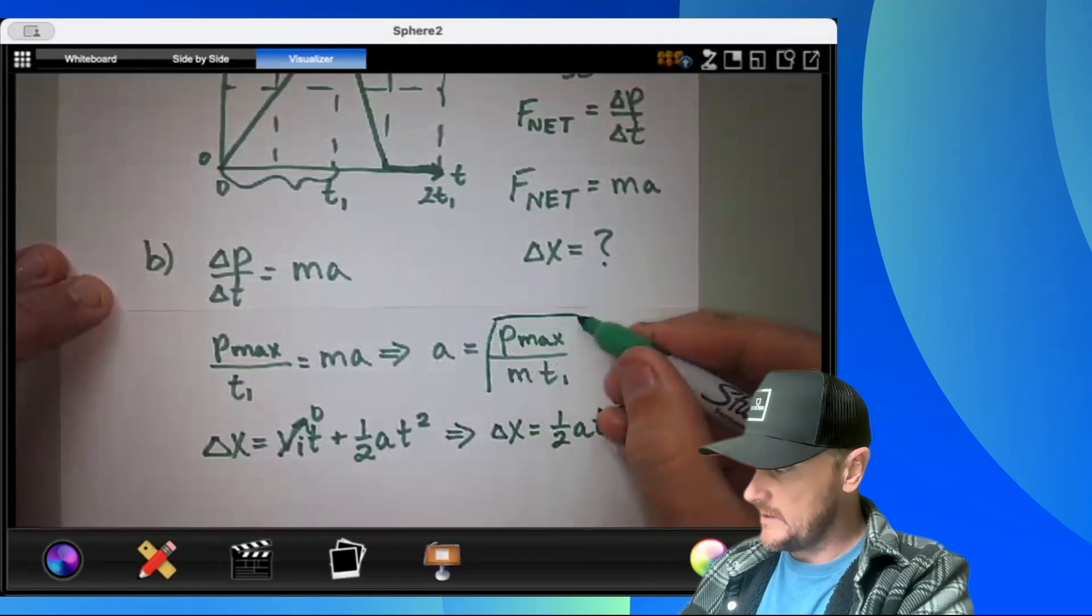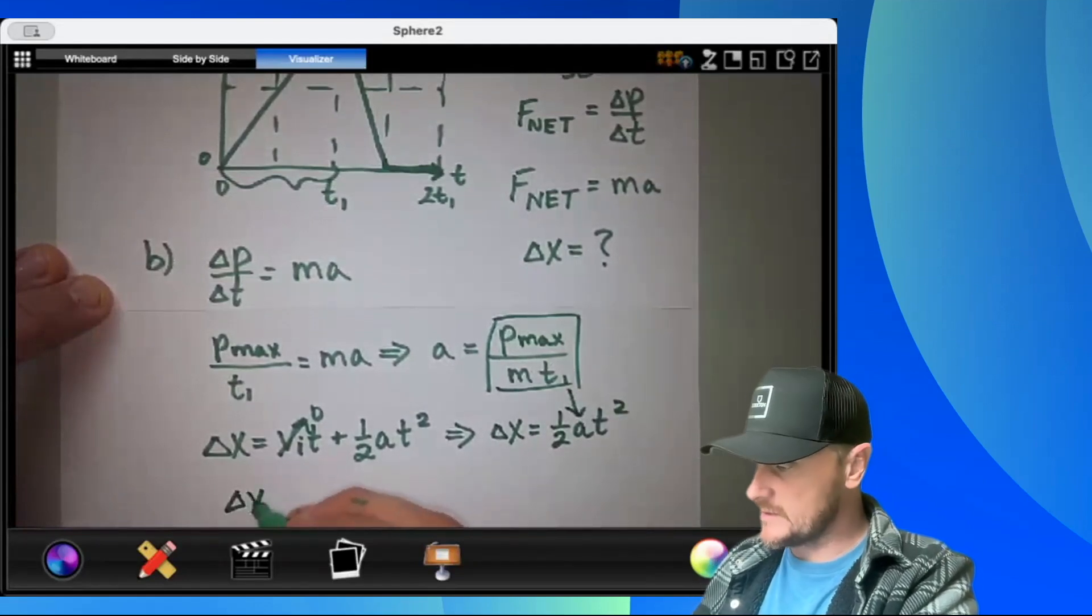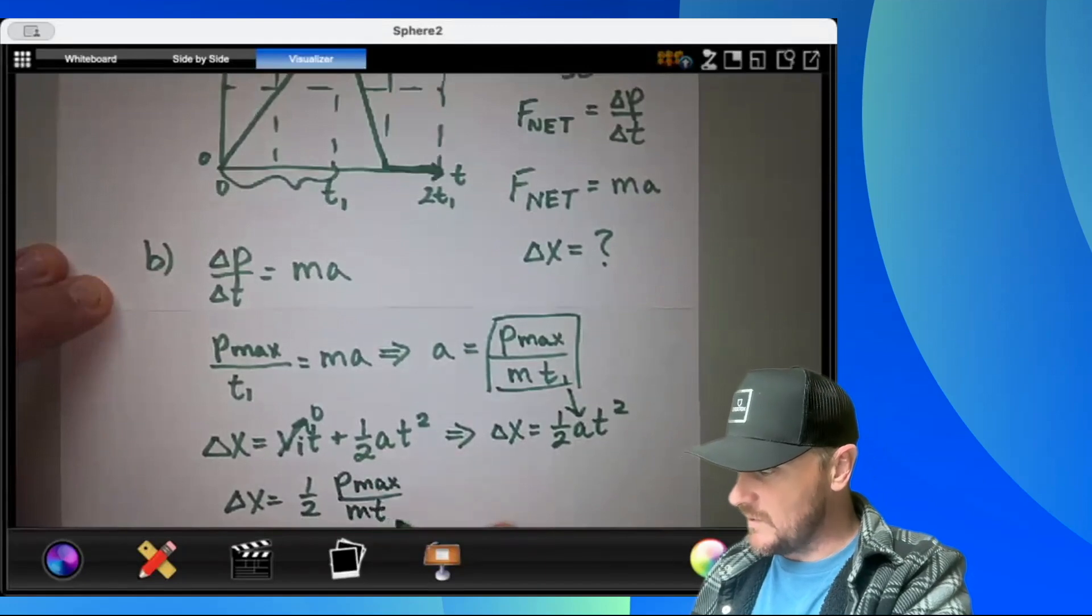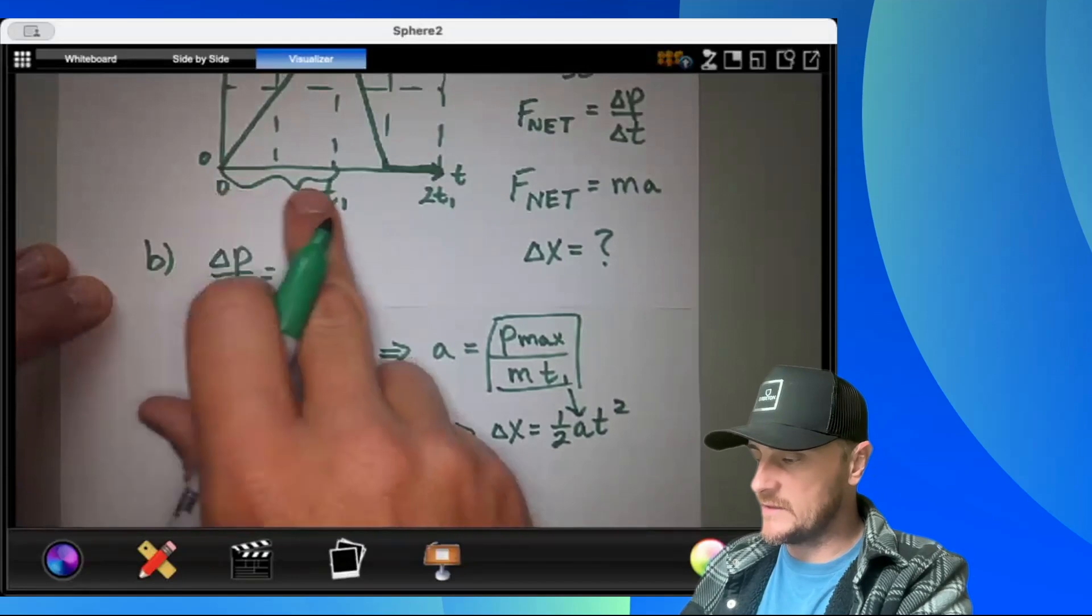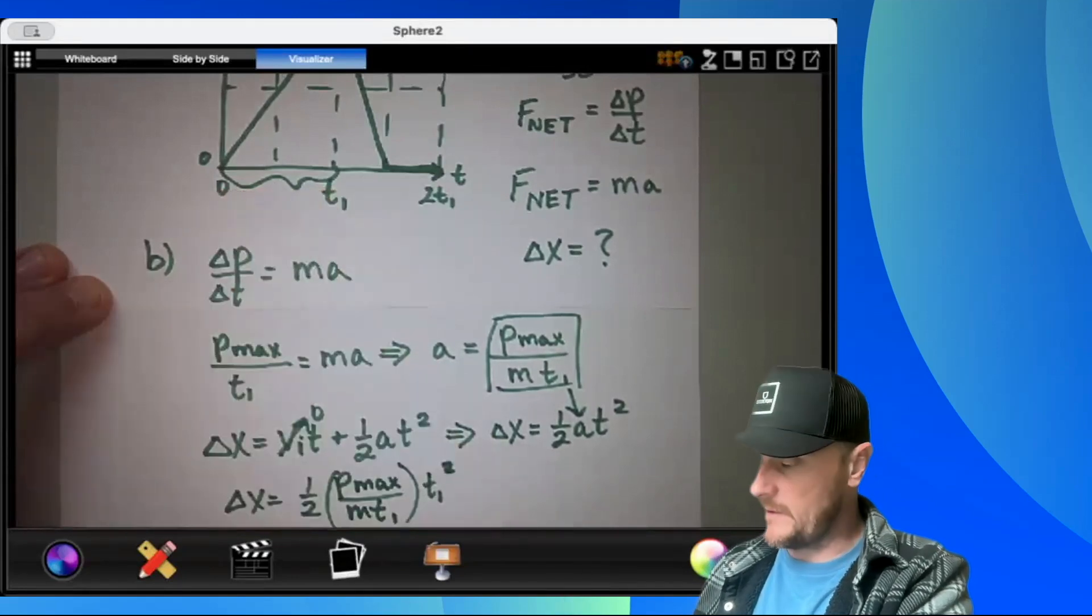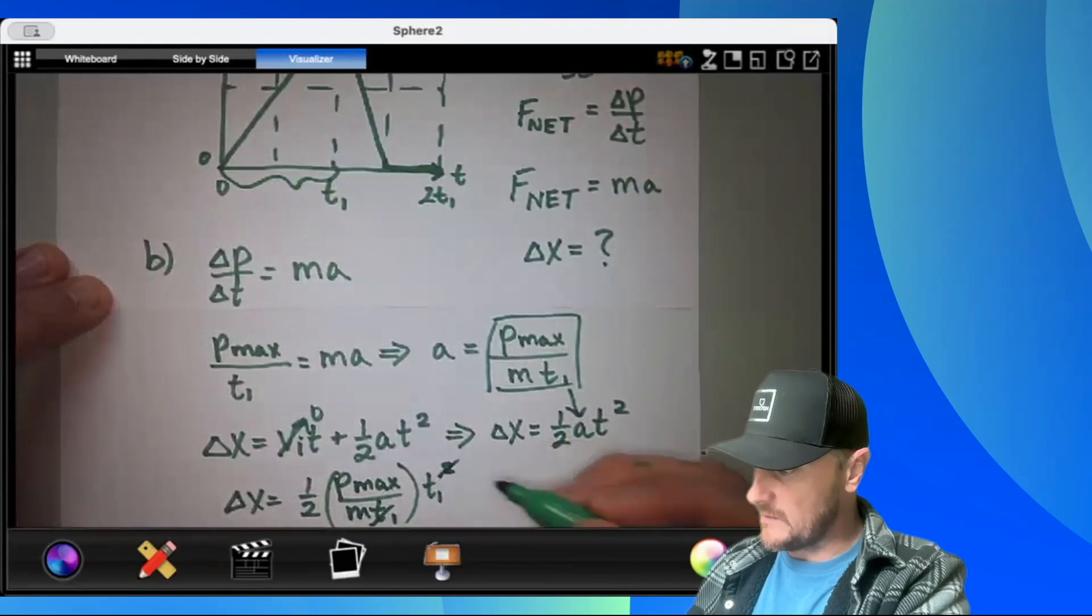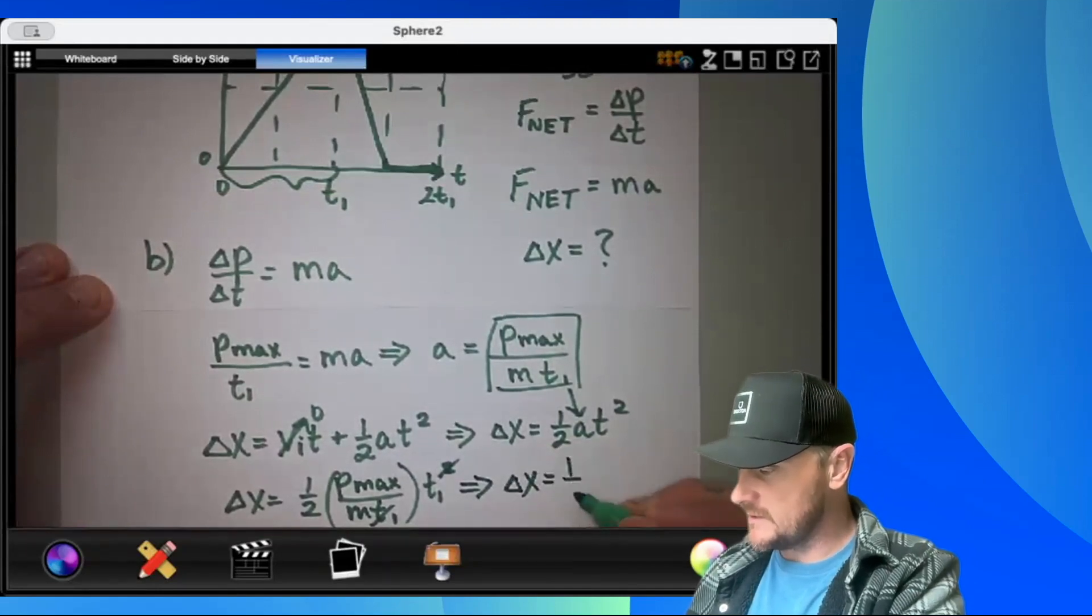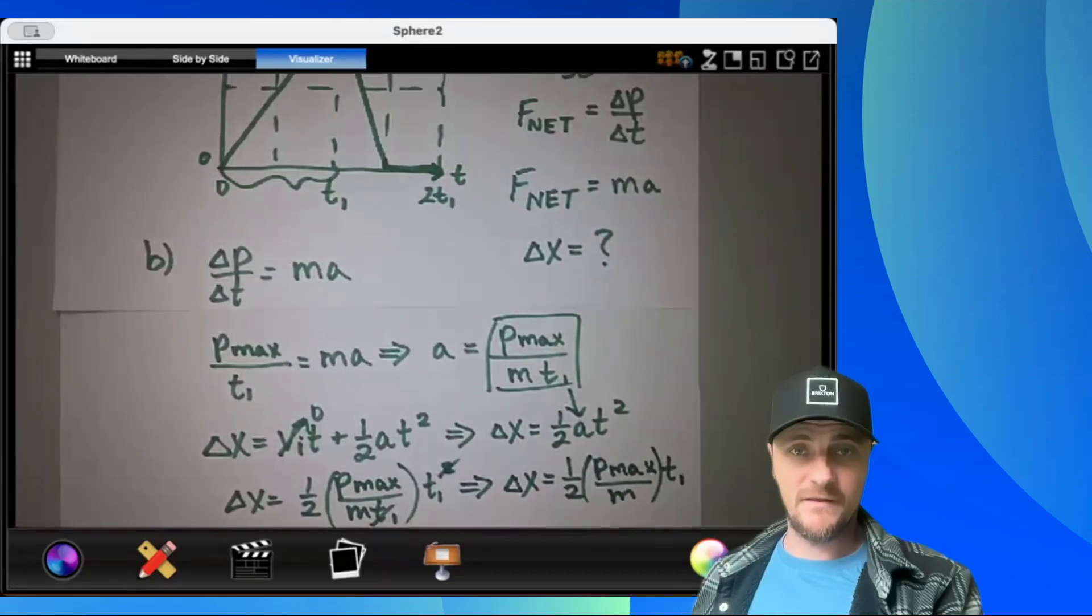Let's plug in this acceleration and we get delta x equals one half p max over m times t1 times, and this time would be t1 squared. That is the time interval we're referring to here. This is like t1 times t1. So this t1 would cancel out with one of these t1s, and I would get a final expression for delta x like that.